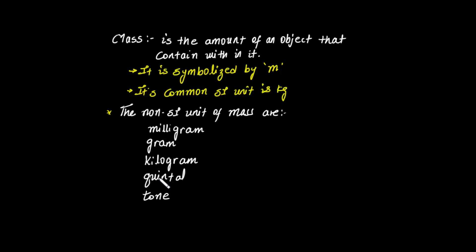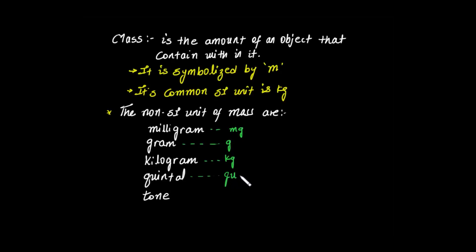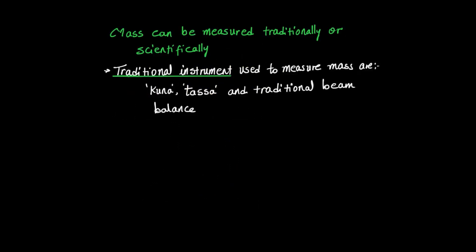We have units including milligrams, using small m and g. What about gram? It is a small g. What about kilogram? It is written as kg. There is also the ton, written as t-o-n. The mass of an object can be measured traditionally or scientifically — the scientific way is more convenient and more exact.